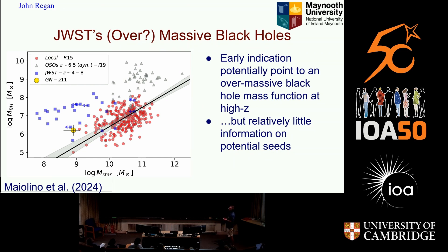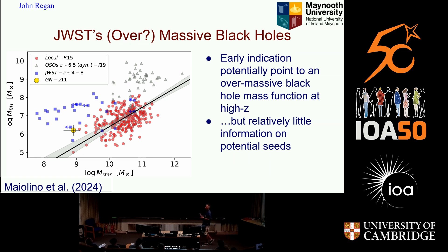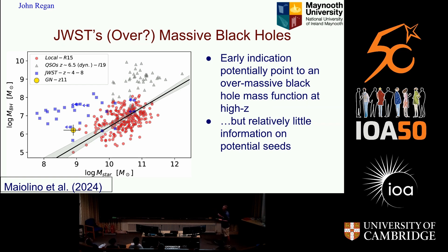This plot from one of Roberto's papers shows the JWST black holes as the blue squares here. These are some of the quasars and these are some of the local relations. What we see predominantly from JWST is that a lot of the black holes in galaxies appear to be over-massive relative to the stellar population — they seem unusually massive — and that's another thing on top of the fact that we see them at all that we're trying to understand.